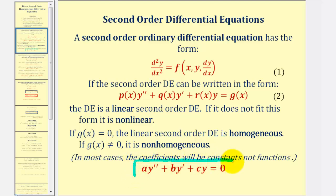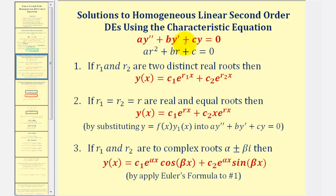If they fit this form, we can find the general solutions by determining the characteristic equation and then finding the solutions to the characteristic equation, also called the characteristic values. Using the values of a, b, and c, we form the characteristic equation, which is quadratic, and therefore the roots will take one of three forms. We may have two distinct real roots, and in this case the general solution would be in this form here, which we've already discussed.